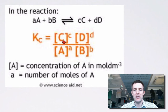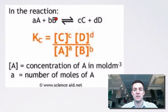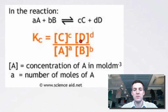The bigger KC is, the more products there will be compared to reactants, meaning the position of equilibrium lies to the right — lots of products, not very many reactants. If you've got a small equilibrium constant, the opposite applies: lots of reactants present at equilibrium and not very many products, so the yield will be small.